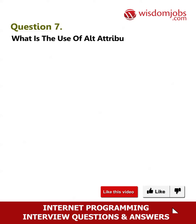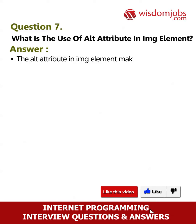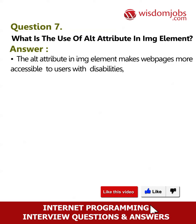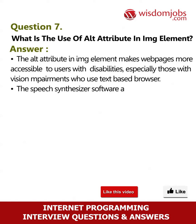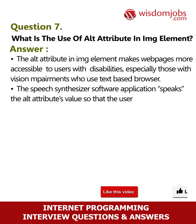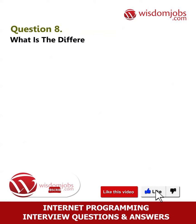Question 7: What is the use of the alt attribute in the img element? Answer: The alt attribute in the img element makes web pages more accessible to users with disabilities, especially those with vision impairments who use text-based browsers. A speech synthesizer software application speaks the alt attribute's value so that the user knows what the browser is displaying.